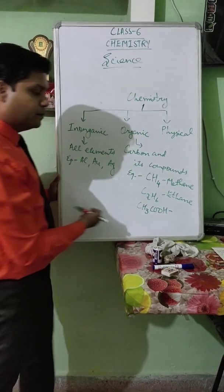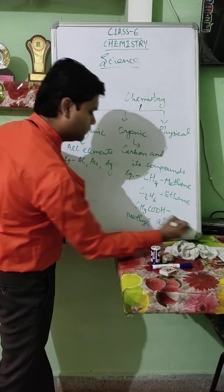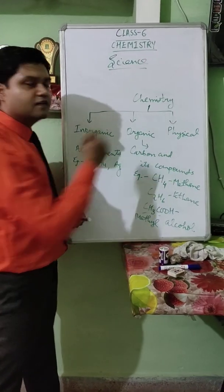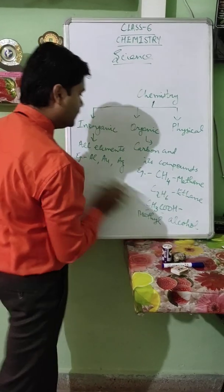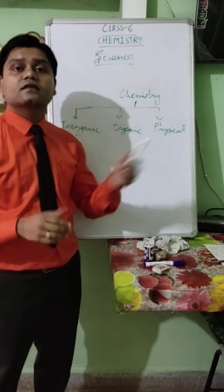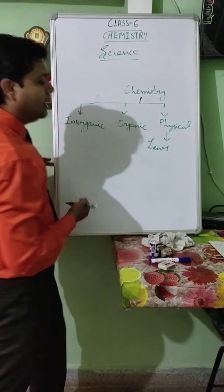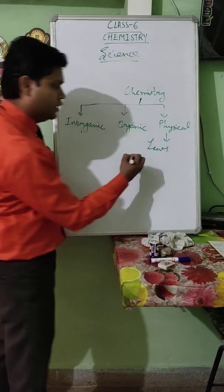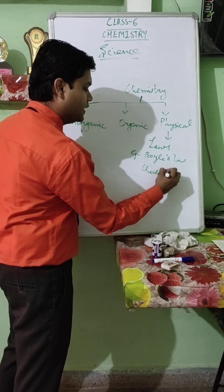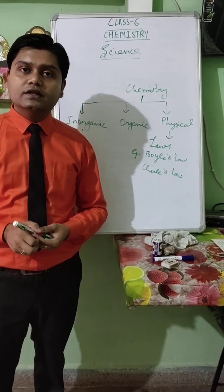CH3COOH, that is Methyl Alcohol, is also consisting of carbon, therefore it comes in the category of Organic Chemistry. Moving on to the last branch: Physical Chemistry. It consists of gas laws applicable in Chemistry. Whatever laws we study related to Chemistry — for example, Boyle's Law, Charles' Law, and Gas Laws — come in the category of Physical Chemistry. So these were the three branches of Chemistry.